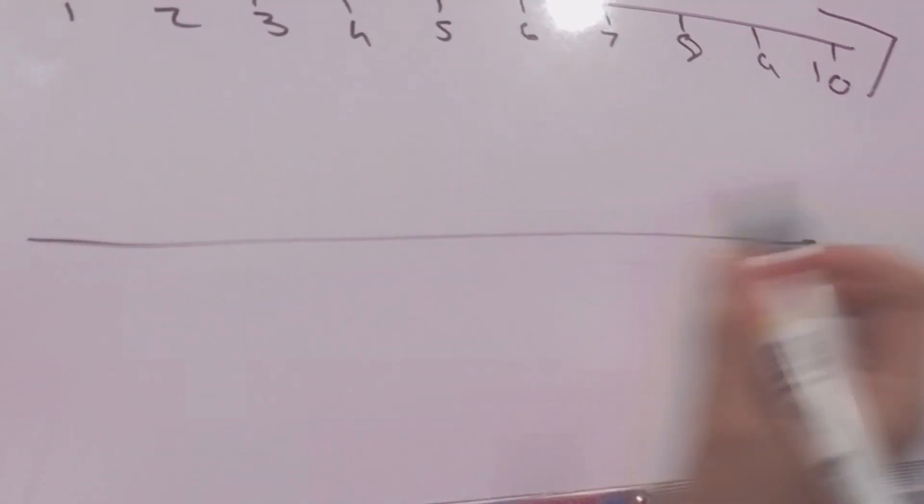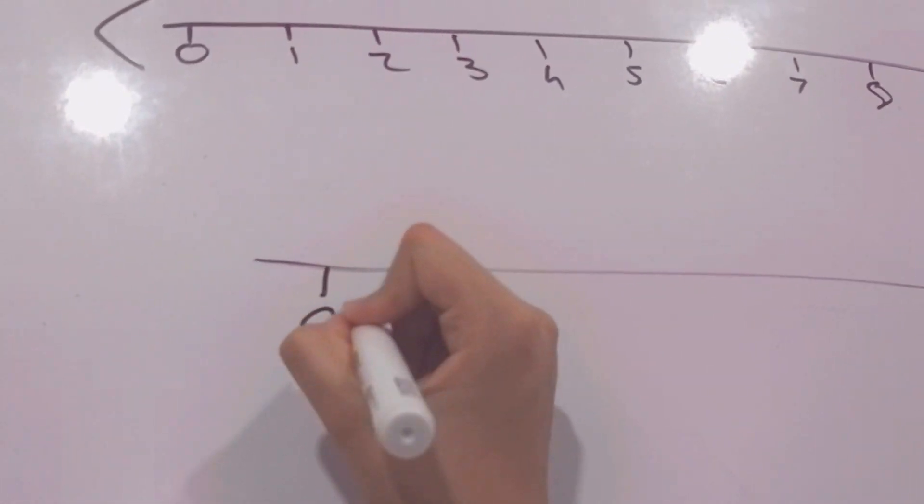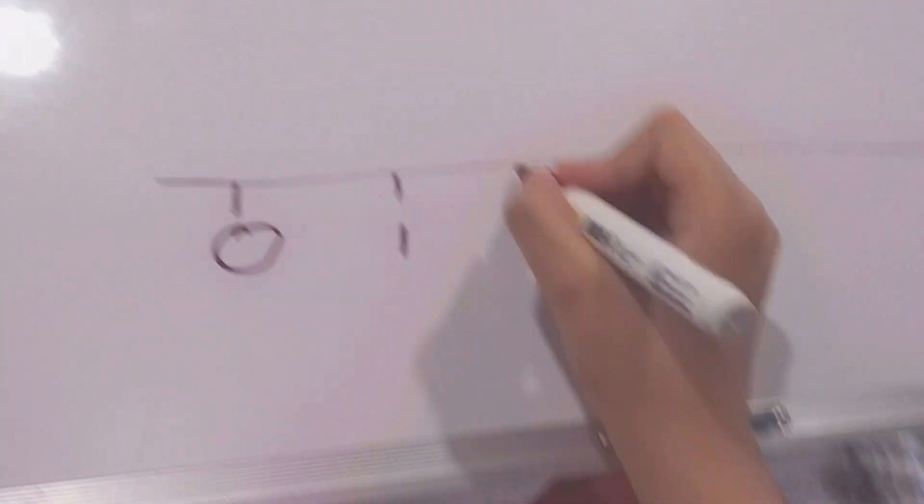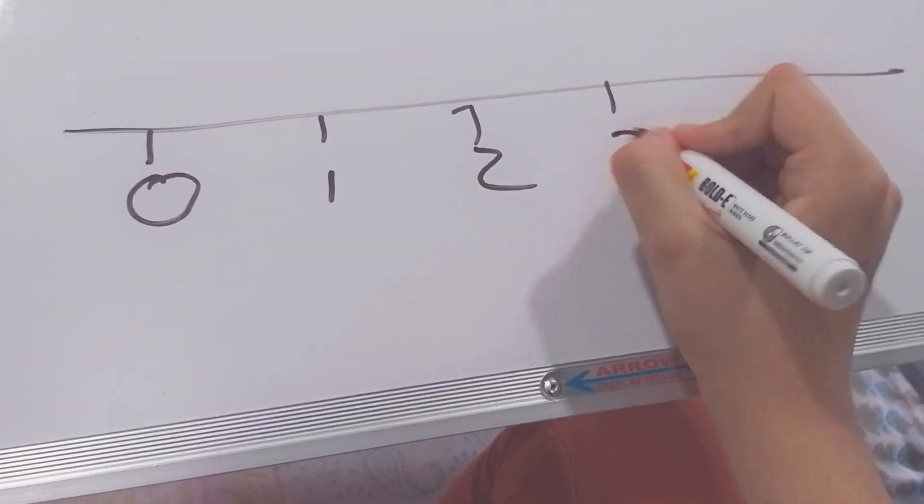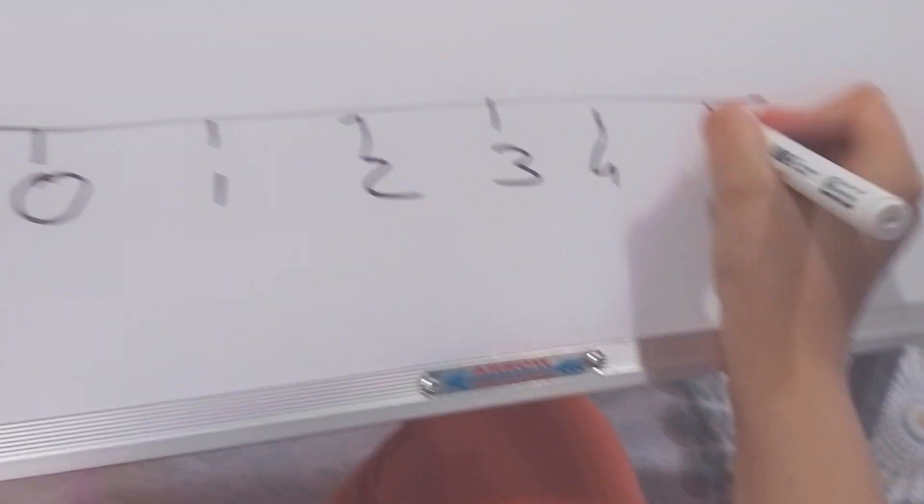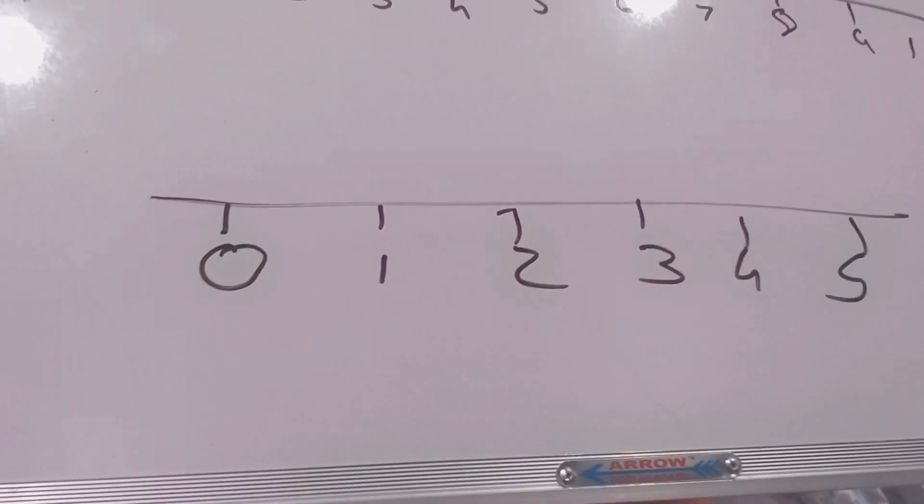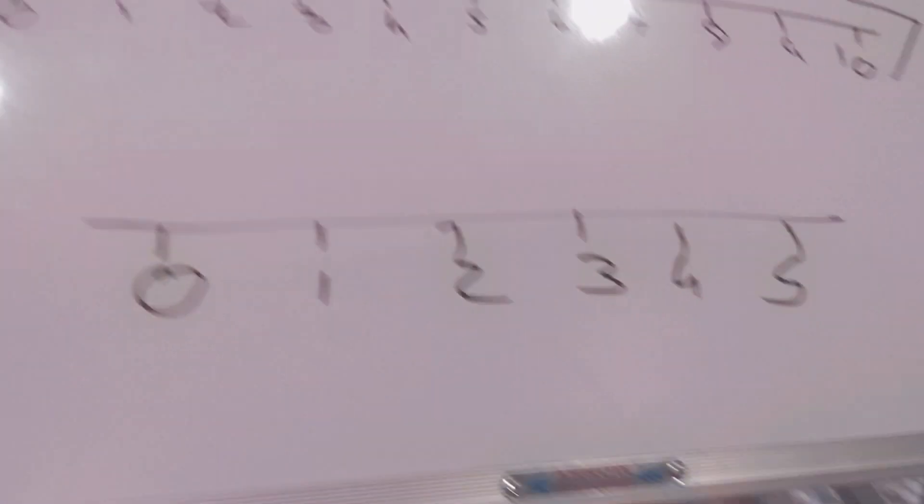Now this is the line. Suppose I have to fit ten numbers, so I'll start from zero, then one, two, then three, then four, and then five. But I don't have space.